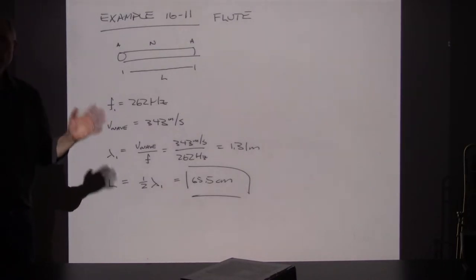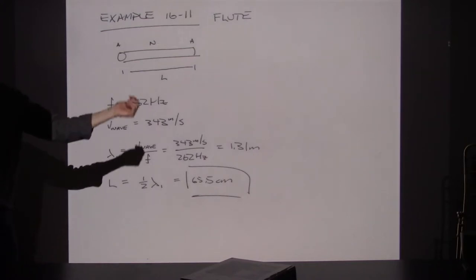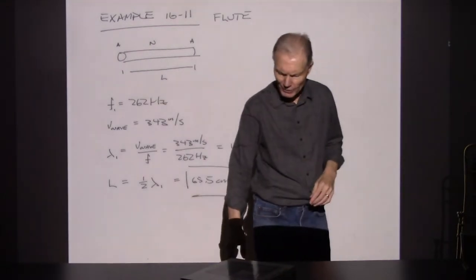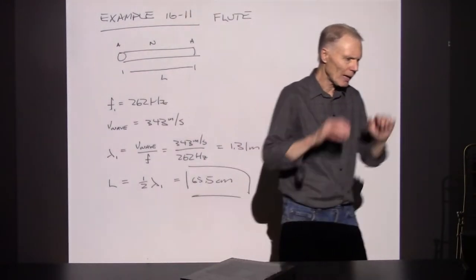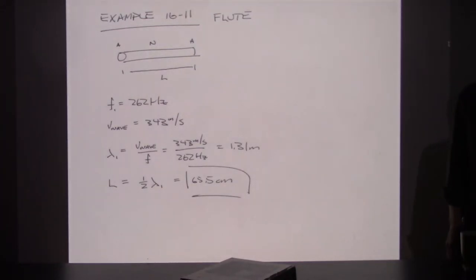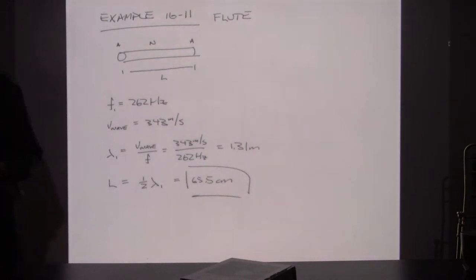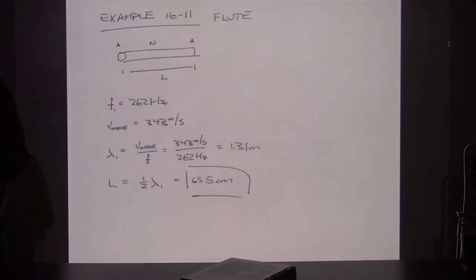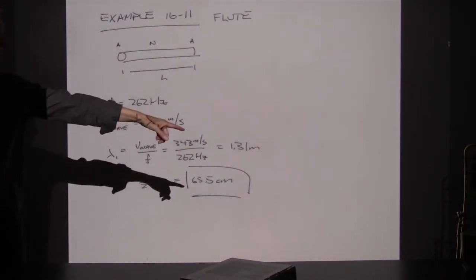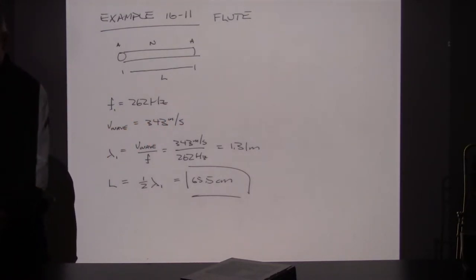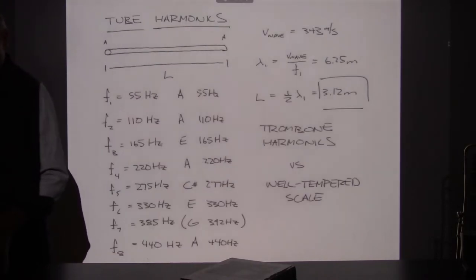If you play the flute, go home and measure it — see if it's close to this. When all holes are covered and you're playing middle C, that's probably one of the low notes on a flute — the longest wavelength you can get, giving the lowest pitch. Flutes, clarinets, and saxophones are complicated because they have so many different valves controlling different lengths. I kind of like the trombone because it has a variable length.